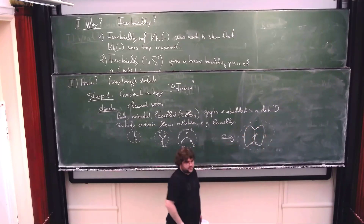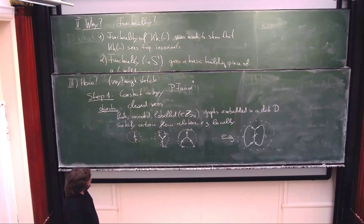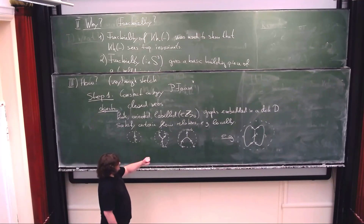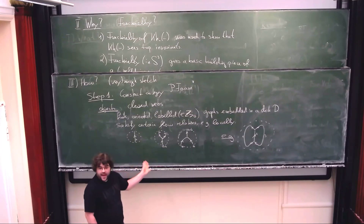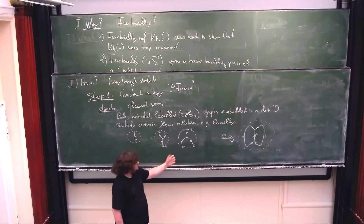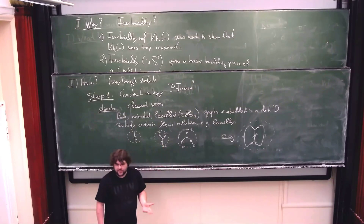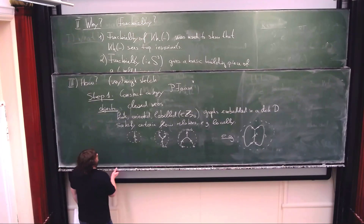For example, we have a disk with an edge labeled 4 and two edges labeled 3 and 1 — that's a closed web. We should think of this via skew Howe duality: these are maps between fundamental representations of SLN for large N, the multiplication and comultiplication maps between exterior algebras. These are the objects — closed webs that don't hit the boundary, since we're looking at links not tangles.